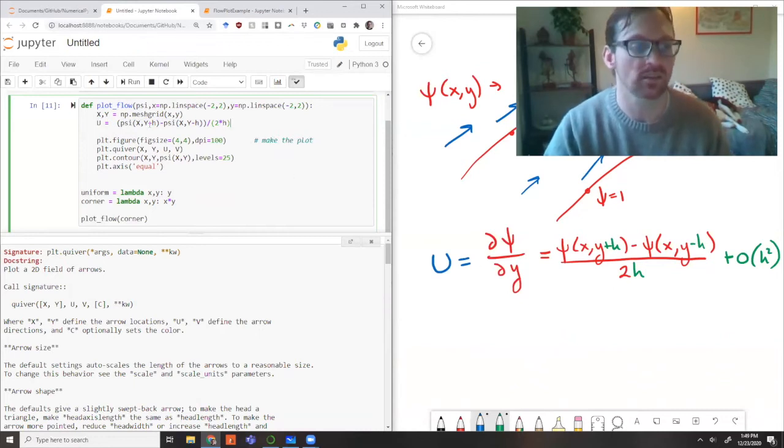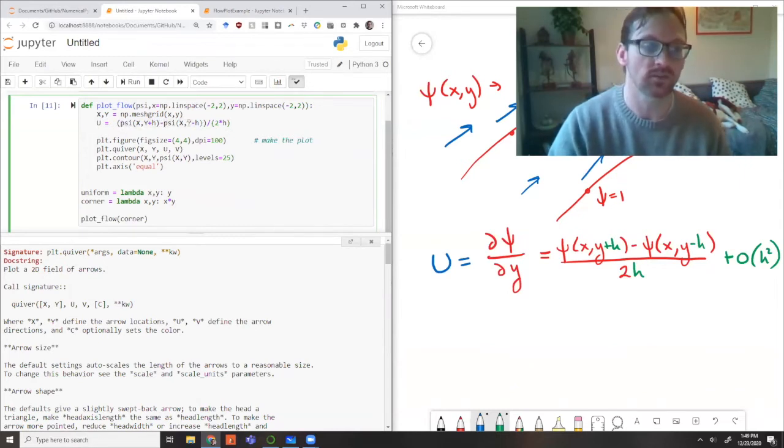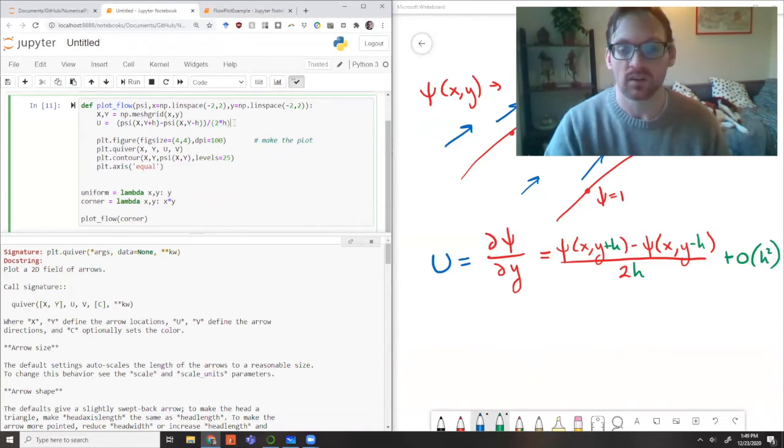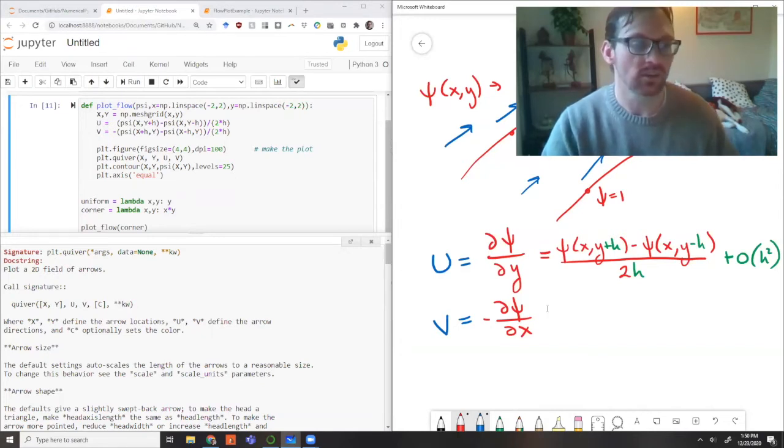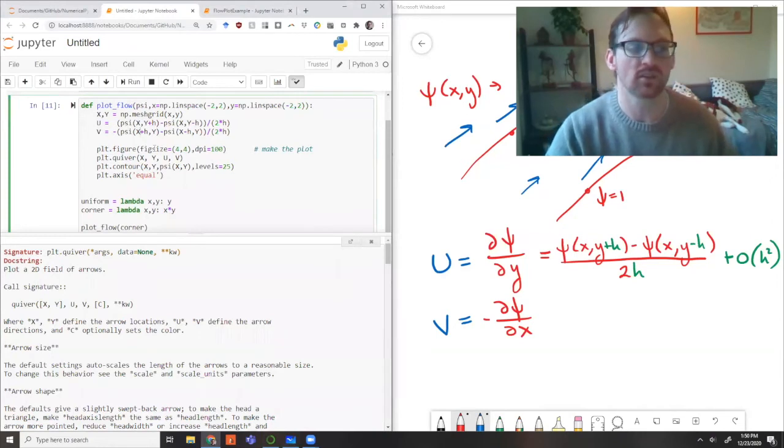Numerically, we just need to set h equal to a small but finite value. That means we won't get exactly the right answer, but our error will be proportional to that spacing squared. As long as that value is small, the error should be negligible. Here's our function—it looks exactly like we've written it mathematically. We're evaluating psi at these two points, taking the difference, and dividing by h. Then we do the same thing for v. The vertical velocity component is minus the x partial derivative of psi. Here I've done that—the only difference is taking that small step in the x direction instead of y, plus the negative sign.